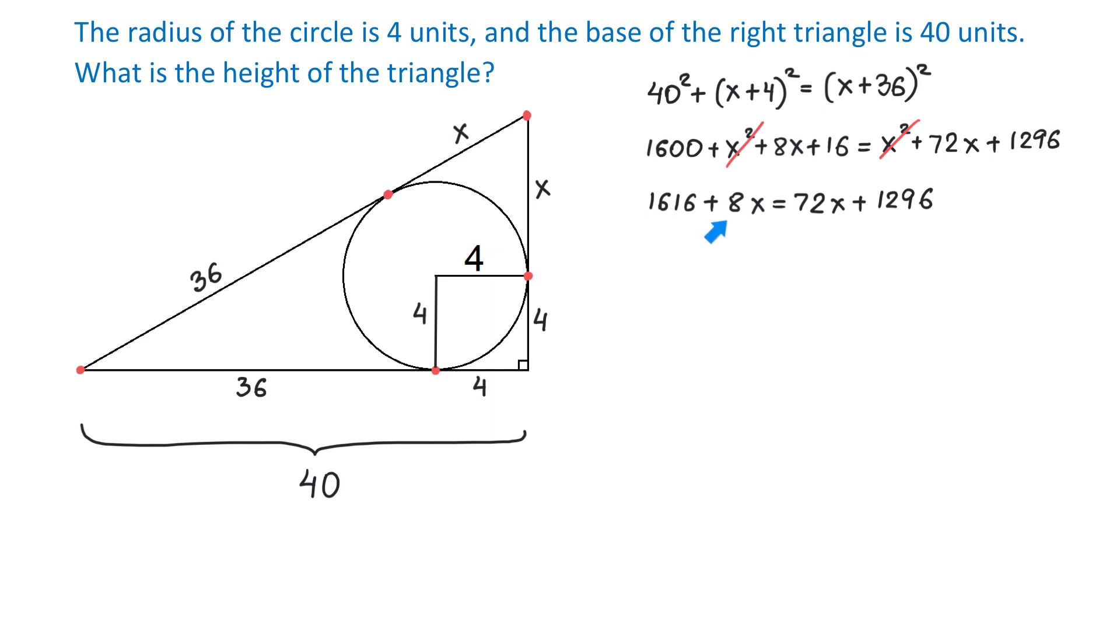From here, if we subtract 8x on both sides and 1296 on both sides, then we get the following. 1616 minus 1296 equals 72x minus 8x. Then on the left side we will have 320, and on the right side, 64x. From here, if we divide both sides by 64, then we will get that x equals 5.